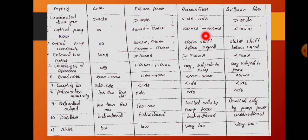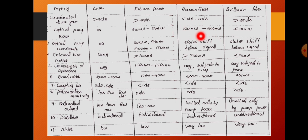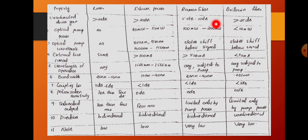In the case of the Raman amplifier, the basic principle is that amplification takes place due to the scattering process. For the Stokes shift to occur, it needs higher pump power, so the Raman amplifier pump power is between 100 mW and 200 mW. In the case of Brillouin fiber it is less than 10 mW. So Raman fiber needs the highest pump power.